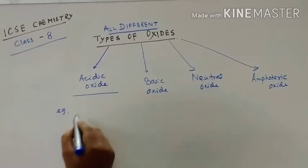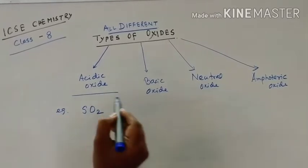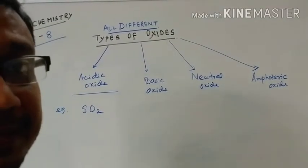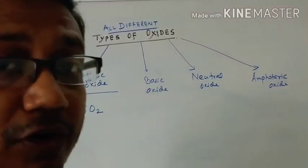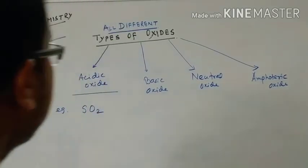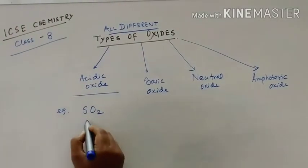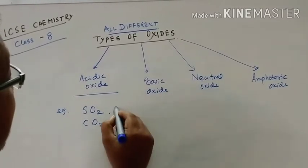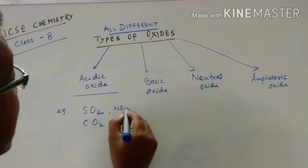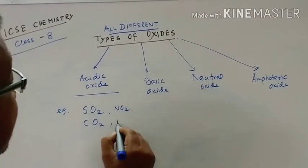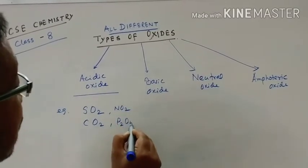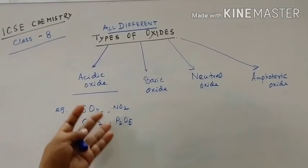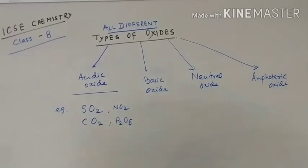Acidic oxide examples: non-metallic oxides are basically acidic oxides. These include sulfur dioxide, carbon dioxide, nitrogen dioxide, and phosphorus pentoxide. These are all the examples of acidic oxides.